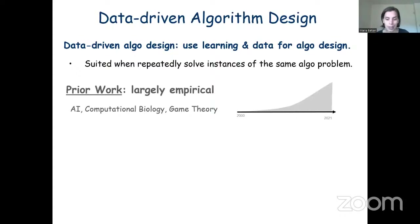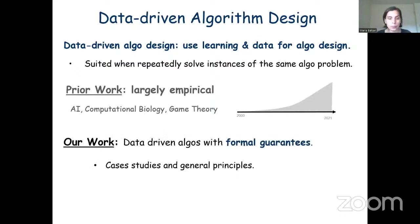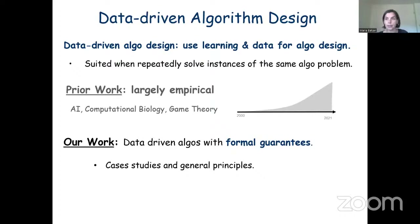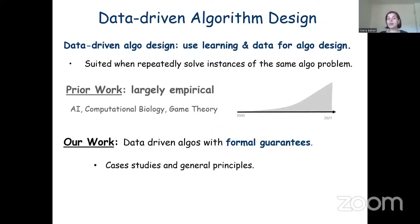However, quite surprisingly, up until very recently there has been very little theoretical understanding of this approach — asking what kind of formal guarantees we can hope to prove for these data-driven algorithms. In the past five years or so, with several of my students and collaborators, we have developed a series of tools for providing performance guarantees for this approach. We started by looking at various case studies coming from algorithms relevant to artificial intelligence, data science, computational biology, and algorithmic game theory.